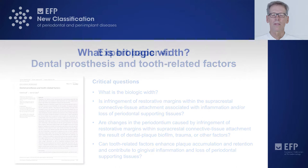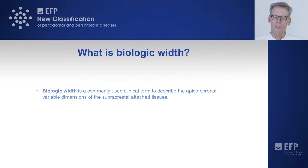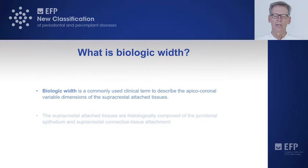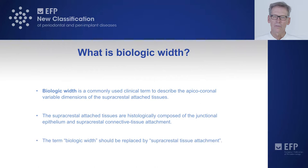Coming to the biologic width: this is a commonly used clinical term to describe the apico-coronal variable dimensions of the supracrestal attached tissues. The supracrestal attached tissues are histologically composed of the junctional epithelium and the supracrestal connective tissue attachment. It is proposed that the term 'biologic width' should be replaced by 'supracrestal tissue attachment.'